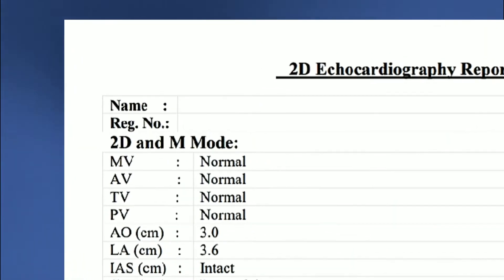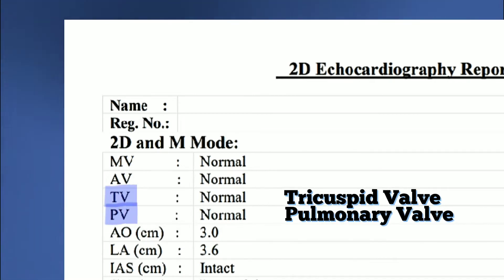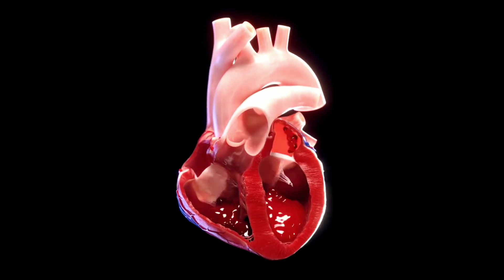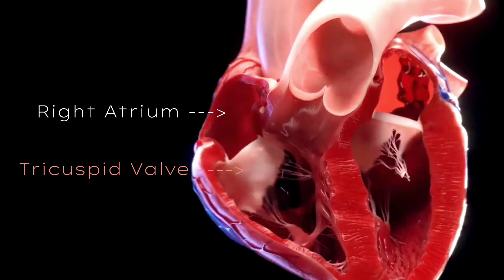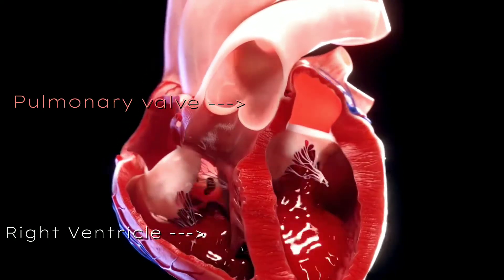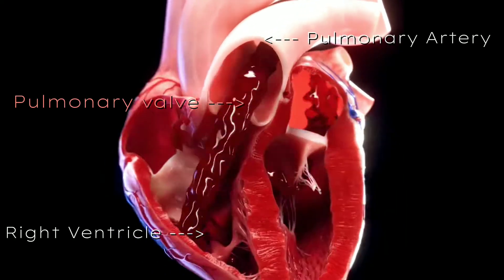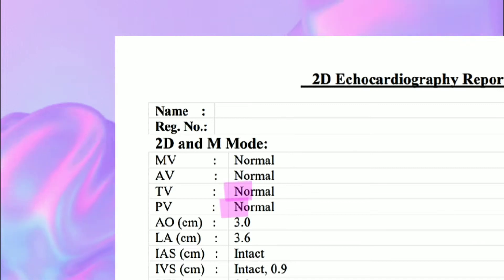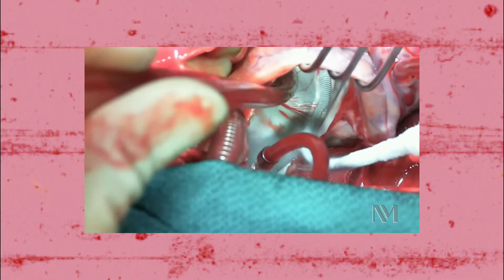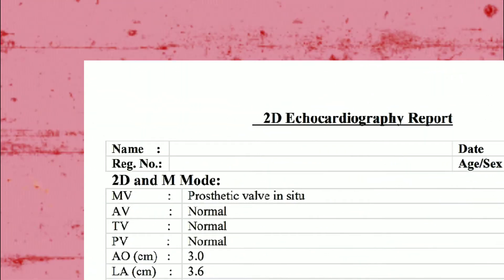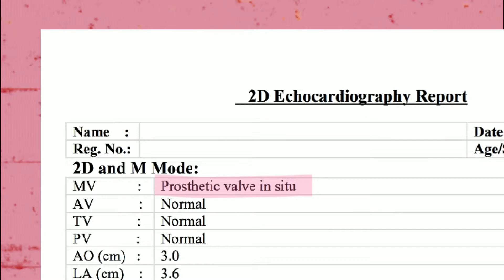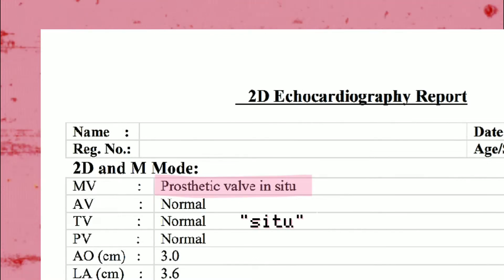The other two valves are the tricuspid valve and pulmonary valve. The tricuspid valve has three leaflets and is situated between the right atrium and right ventricle. The pulmonary valve is situated between the right ventricle and pulmonary artery. These both valves are normal in most cases. If a patient had a valve replacement surgery, then 'prosthetic valve in situ' will be written, which means a prosthetic valve is present in the heart. 'Situ' means present.